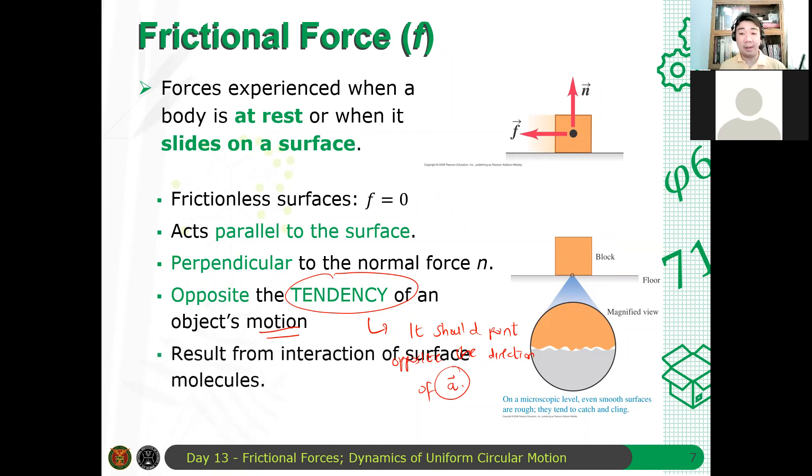However, the direction of the frictional force and the velocity vector are the same. What you want to say here is that it should point opposite the direction of A, the acceleration. This is very important. By convention, wherever your direction of A is, the direction of your frictional force is opposite to that. It was found out that frictional forces are electromagnetic interactions. There's some adhesion or cohesion happening between the surfaces of two objects.